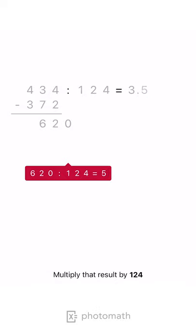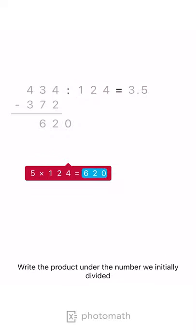Multiply that result by 124. Write the product under the number we initially divided.